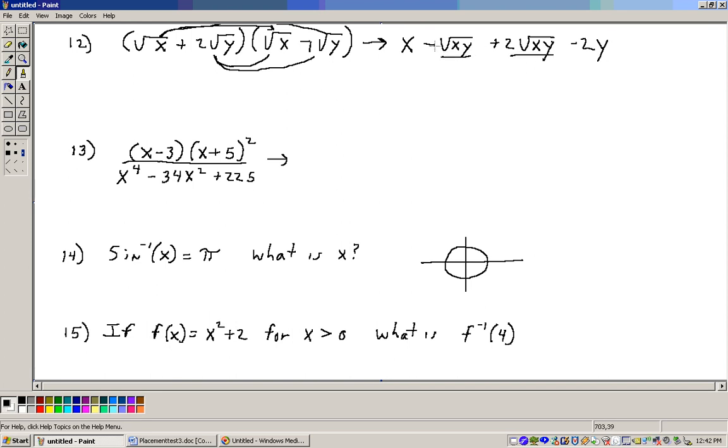Now you can combine the middle terms, and we've got minus one of these plus two of those will give us two minus one is one. So it would be x plus one square root of xy minus two y, and that's the answer, D.